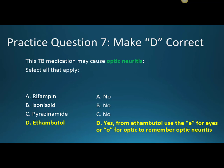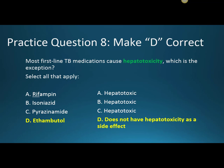Question seven: this TB medication may cause optic neuritis. Ethambutol is known for this — use E for eyes or O for optic to remember optic neuritis from Ethambutol. Question eight: most first-line TB medications cause hepatotoxicity — which is the exception? Rifampin, Isoniazid, and Pyrazinamide are all hepatotoxic and damage the liver. Ethambutol does not have hepatotoxicity as a side effect — it's the one exception. Patients on all these medicines need careful monitoring of liver function tests.